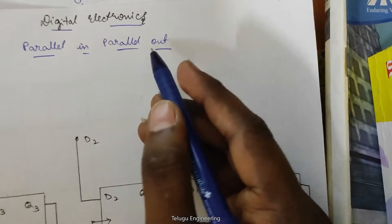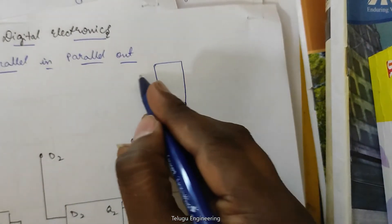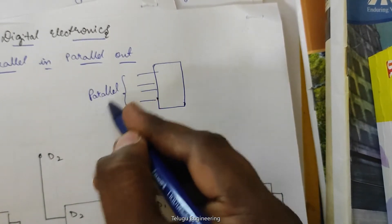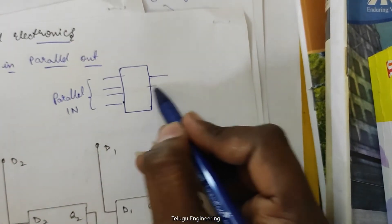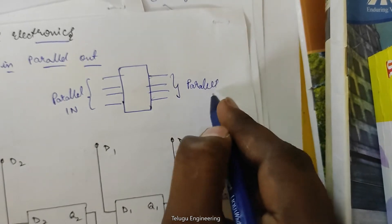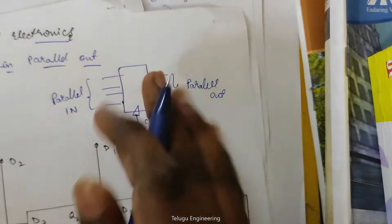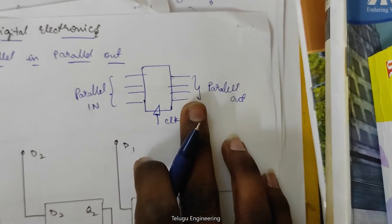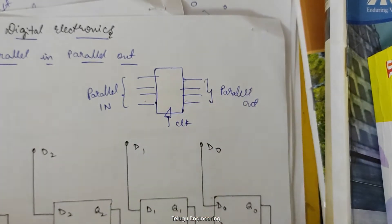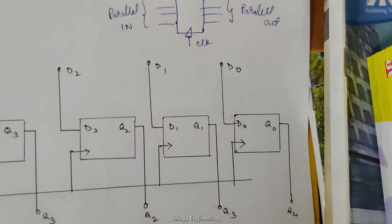The word itself suggests Parallel Input Parallel Output — we are considering a shift register where we take a parallel input. This becomes your parallel input and the output that we get is a parallel output. We give parallel output by giving a clock. So this is the shift register where we give parallel input and we get a parallel output.